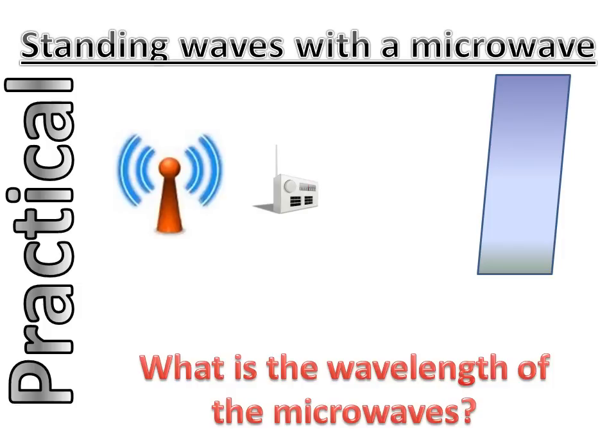Another experiment you can do with a microwave emitter, which is kind of poorly displayed as this blue antenna here. Microwaves, like any waves, can reflect. As microwaves reflect off that metal screen on the right there, you can detect nodes and antinodes as you move a receiver between them.